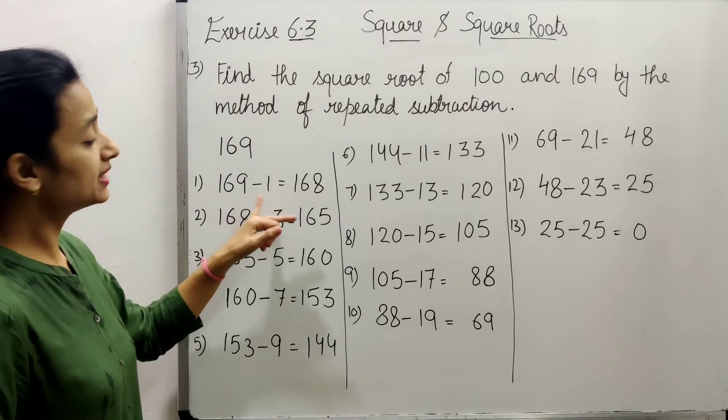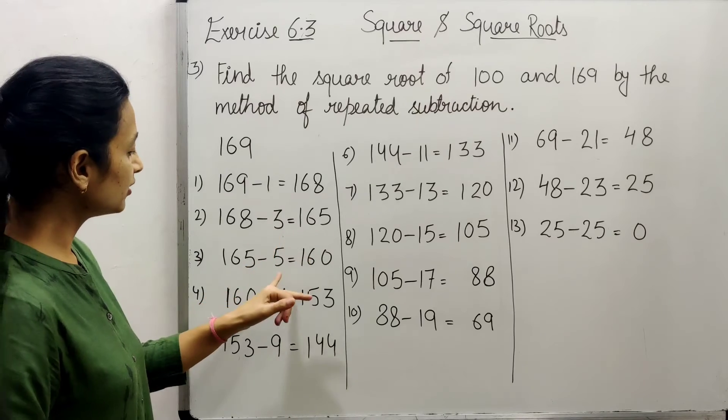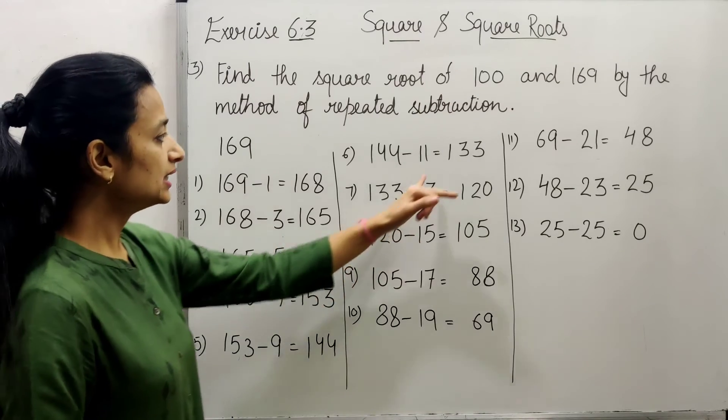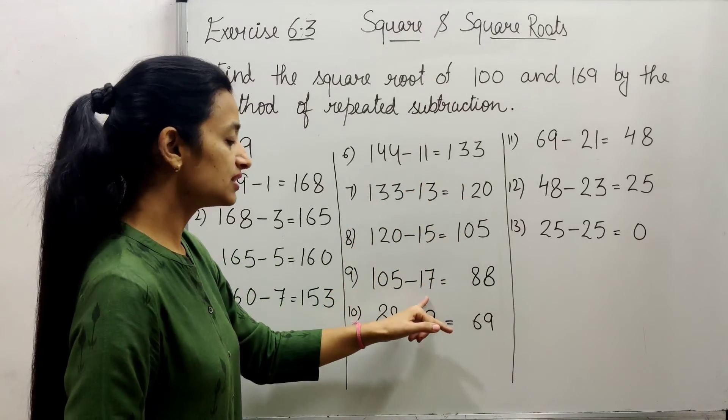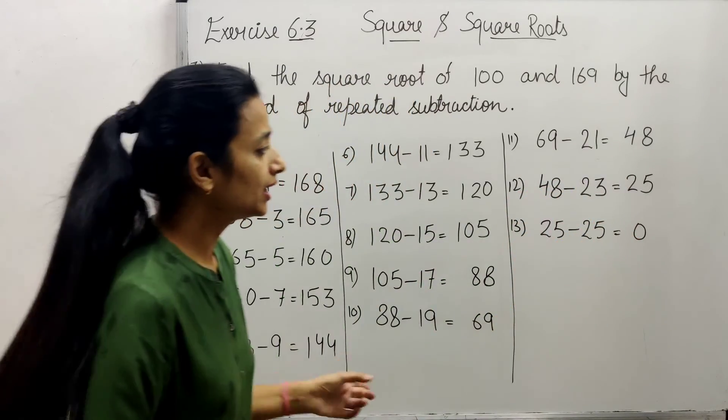So we have done: 169 minus 1 is 168, then minus 3, then 5, 7, 9, 11, 13, 15, 17, 19, 21, 23, 25, and this is complete.